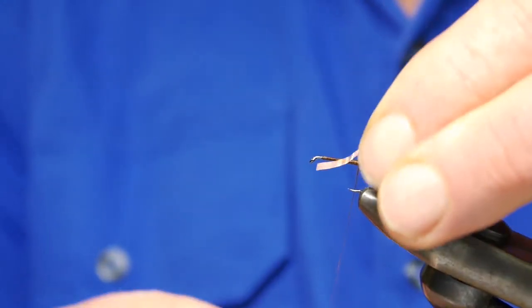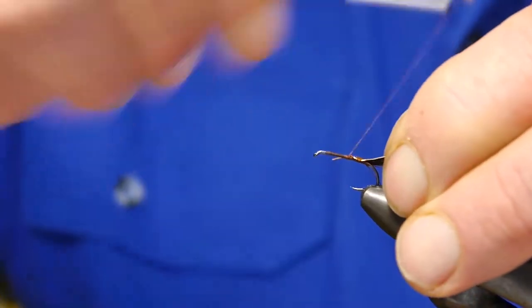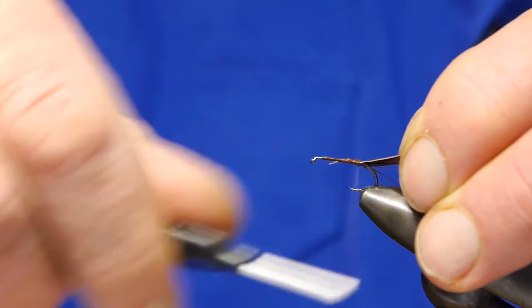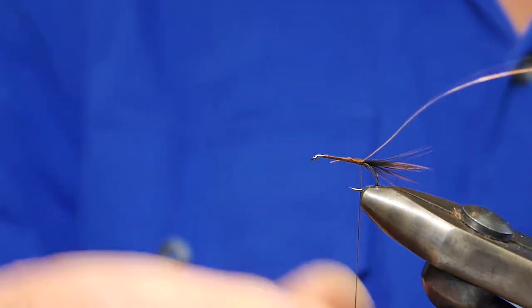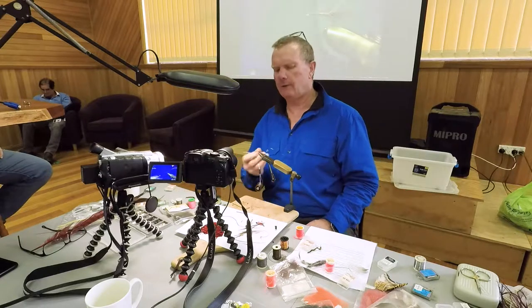So copper wire for the rib. Do you like the copper wire for the little bit of flash that it gives or just because it makes a strong nymph? It makes a stronger nymph but it gives that little bit of segmentation. And copper, trout love copper, I think.